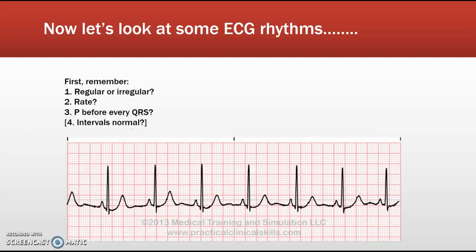Let's talk about maintaining consistency with interpreting rhythms by developing a consistent routine. The first thing I always ask: is it a regular or irregular rhythm? If it's irregular, that's a completely different path we'll deal with later. For regular rhythms, you ask: what is the rate? Since I'll be giving you six-second strips, we'll use that method. Here we have seven complexes in six seconds — a heart rate of 70.